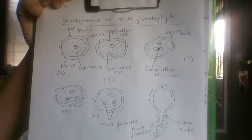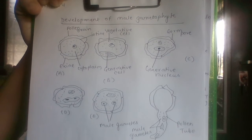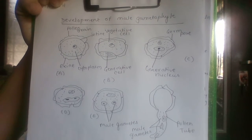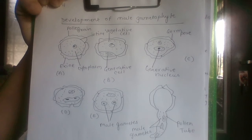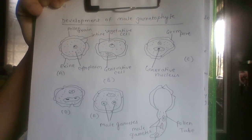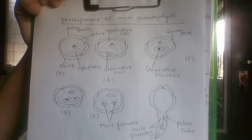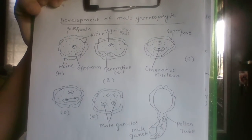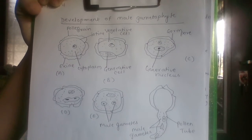Remember the two mitotic divisions: the first produces the vegetative cell and generative cell, and the second involves only the generative cell, resulting in the formation of two male gametes. This is all about the development of male gametes.